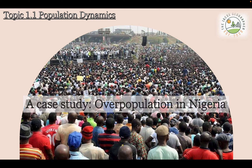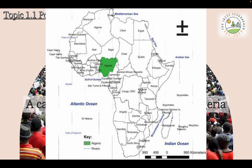This is a GCSE revision video on the first case study covered in Theme 1 of Paper 1, which is Overpopulation. The example country covered in this session is Nigeria, and as you can see from the map, it's fairly central in the continent of Africa.